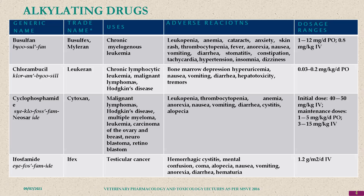Among the alkylating agents, busulfan is used in chronic myelogenous leukemia or blood cancer. The side effects include leukopenia and anemia, because the side effects of chemotherapeutic or antineoplastic drugs are very high.